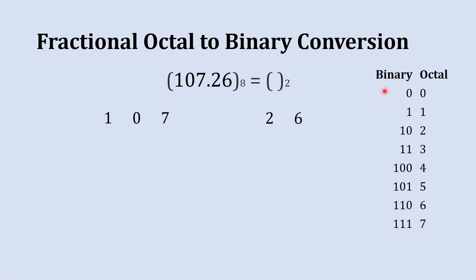Here's our binary to octal conversion table. Let's start with the 107 number. We'll begin with the digit 7. What is the binary equivalent of 7? That is 111, so we write 111 here.